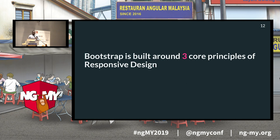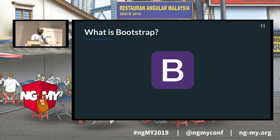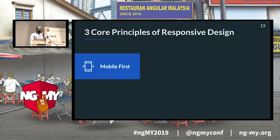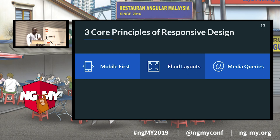Bootstrap is built around three core principles of responsive design. The first is mobile first — you start by building the mobile version of your website before the desktop version. Since mobile has less space, building the desktop version becomes easier. The second is fluid layouts, which means containers scale based on the viewport. The third is media queries — writing CSS specific to the device you are targeting, with different CSS depending on the viewport size.